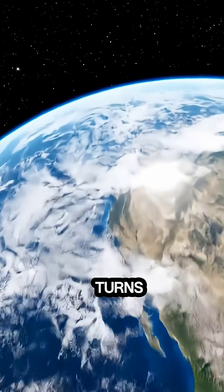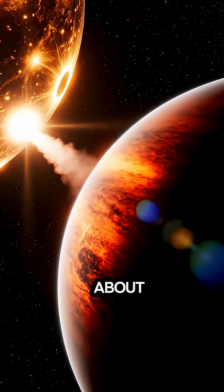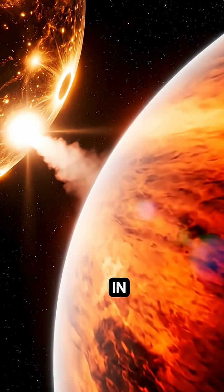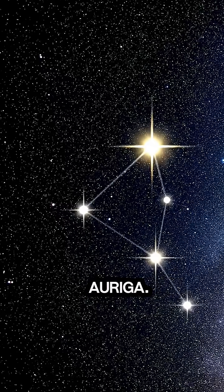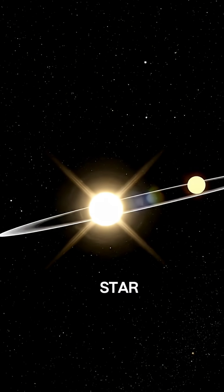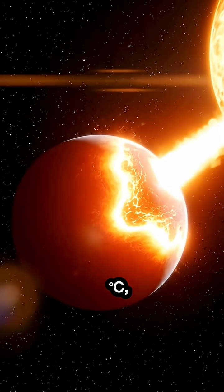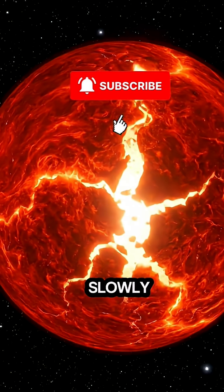Our telescope turns towards stranger worlds. WASP 12b. Lying about 1,400 light years away in the constellation Auriga. It orbits its star so closely that its surface reaches 2,500 degrees. And gravity is slowly tearing it apart.